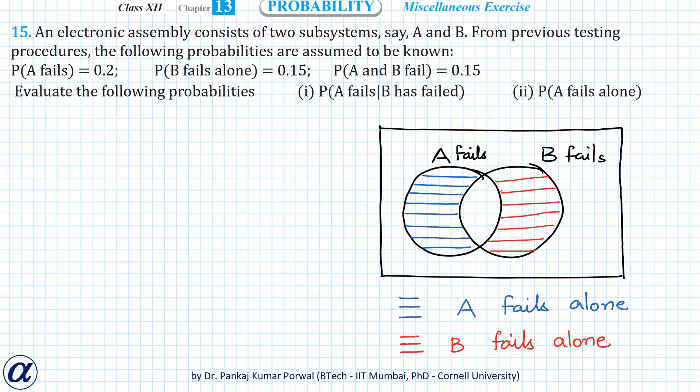In this question, we are given that an electronic assembly consists of two subsystems A and B. From previous testing we know that probability A fails is 0.2, probability B fails alone is 0.15, and probability A and B fail is 0.15.